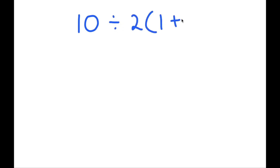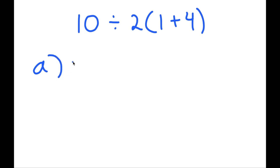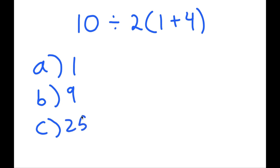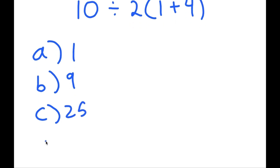In this video, I'm going to solve an expression that many people actually get wrong, and which is very simple. So I have 10 divided by 2 times 1 plus 4. For those of you who actually want to solve this, I have four answer choices: A, which is 1; B, which is 9; C, which is 25; and D, which is 30.